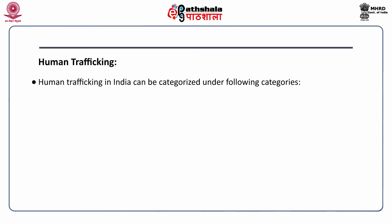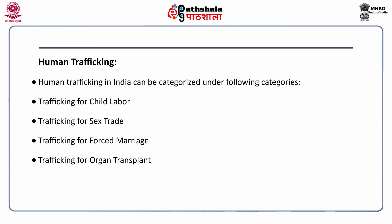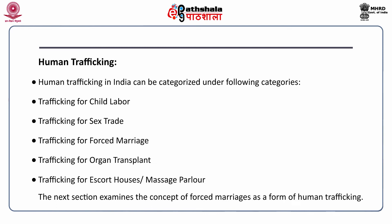Human trafficking in India can be categorized under the following categories: trafficking for child labor, trafficking for sex trade, trafficking for forced marriage, trafficking for organ transplant, and trafficking for escort houses or massage parlors. The next section examines the concept of forced marriages as a form of human trafficking.